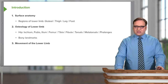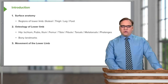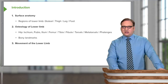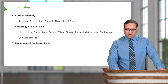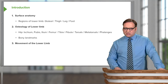Then we're going to look at the bones that make up the lower limb. We'll look at the hip bone, the ischium, pubis, and ileum. Then we'll look at the femur, the tibia, fibula, the tarsal bones, the metatarsals and phalanges. We'll look at numerous bony landmarks on each of these individual bones, and then we'll consider some movements that are possible with the lower limb.